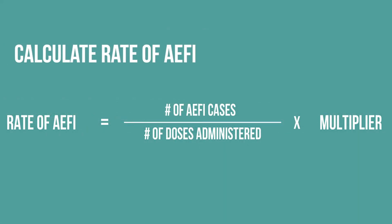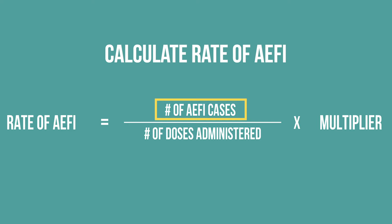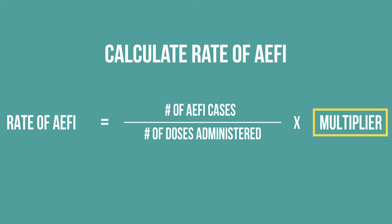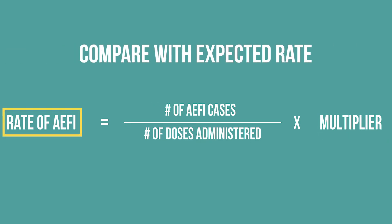This is the formula for calculating the rates of AEFI. You will need: the number of AEFI cases due to a vaccine reported in a given period, the number of doses administered of the same vaccine during that period, and the appropriate multiplier. You will then need to check if the rate you calculated is above or below the expected rate.